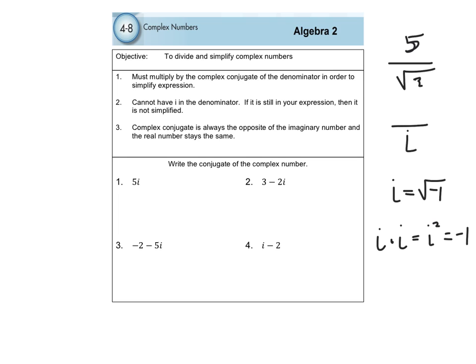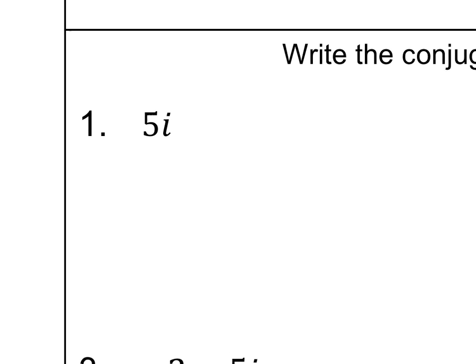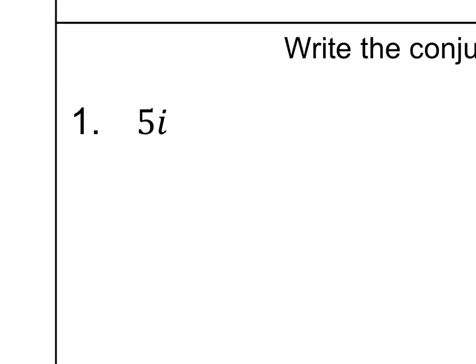For example, the conjugate of 5i. Is this the imaginary part or the real part? It's the imaginary part — because it has the letter i in there. So I want to know what's the conjugate of 5i. I have to take the opposite of the imaginary number. The opposite of positive 5i is negative 5i. So the conjugate of 5i is negative 5i.